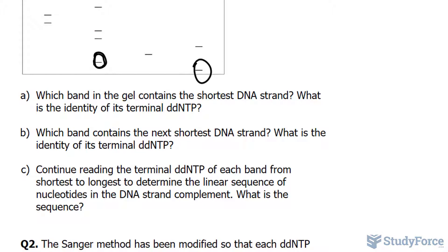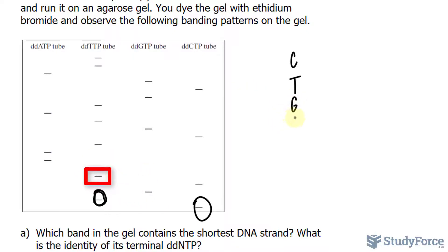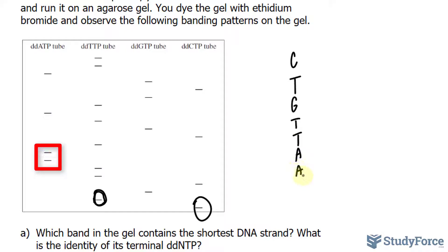For question C: continue reading the terminal ddNTP of each band from shortest to longest to determine the linear sequence of the nucleotides in the DNA strand complement. What is the sequence? So if we continue what we learned, the next one — the next shortest — was G, then comes T, T, A, A, T, C, and you would finish off the rest like this.